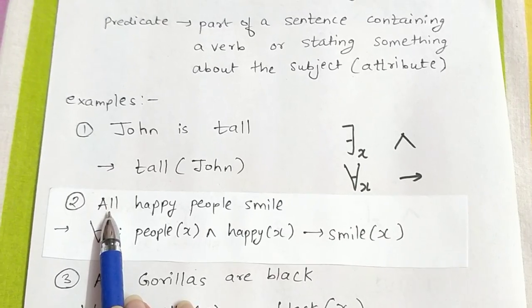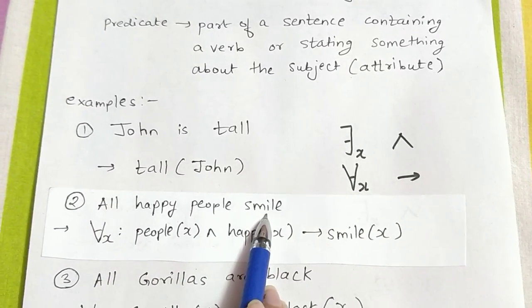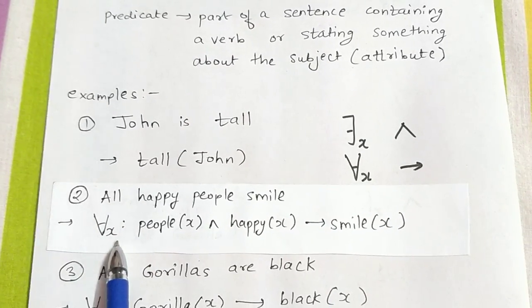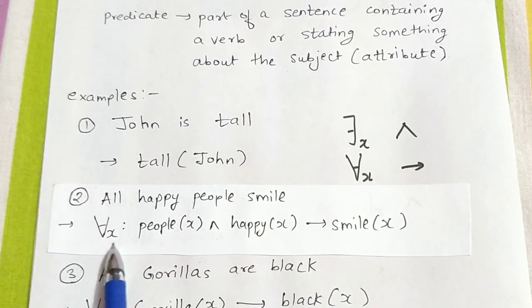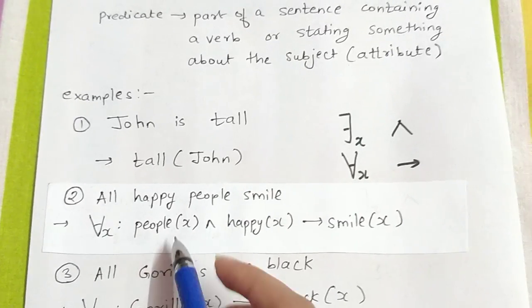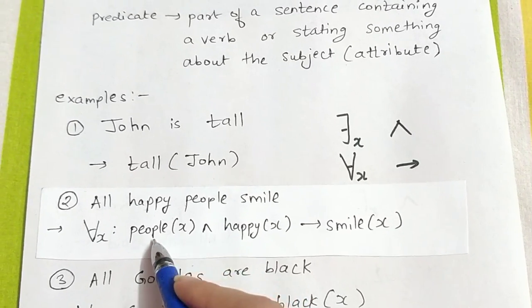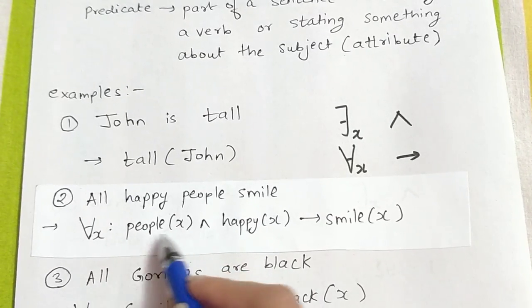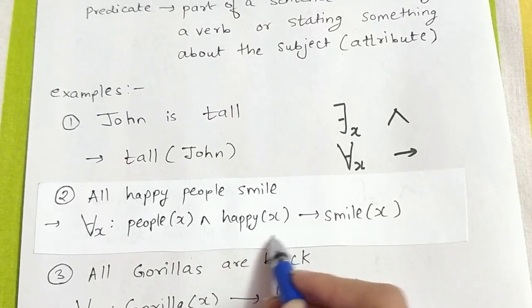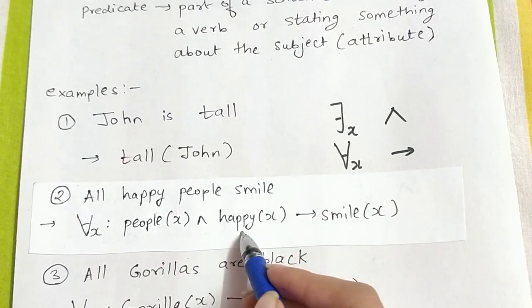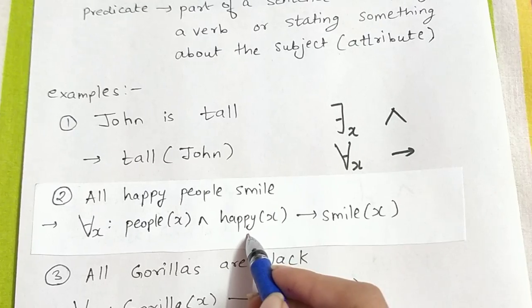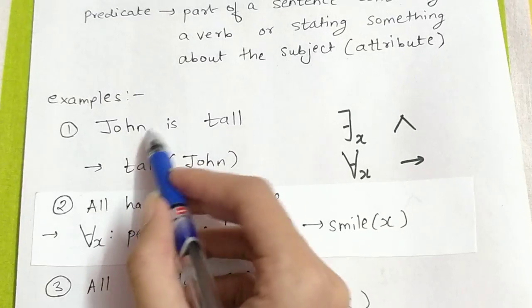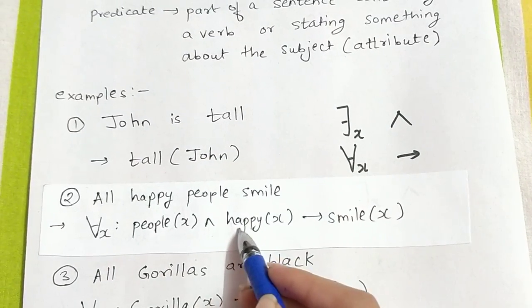Our next example is all happy people smile. Since we have the word 'all', we are going to use universal quantifier. For all X, people(X). What does people(X) mean? It basically means we are storing people in X. And happy people. Happy is an attribute, similar to John is tall. Hence we write happy(X).